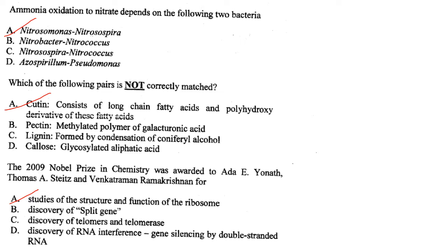The 2009 Nobel Prize in Chemistry was awarded to Ada Yonath, Thomas A. Steitz, and Venkatraman Ramakrishnan for their studies of the structure and function of the ribosome. Answer is option A.